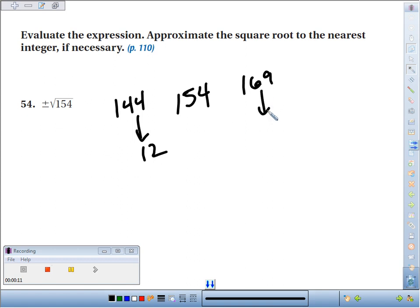The square root of 144 is 12, the square root of 169 is 13, so the square root of 154 has to be somewhere between them.